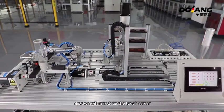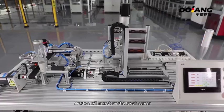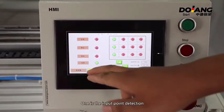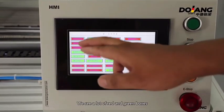Next, we will introduce the touch screen. The touch screen is divided into the four approval parts. One is the input point detection.